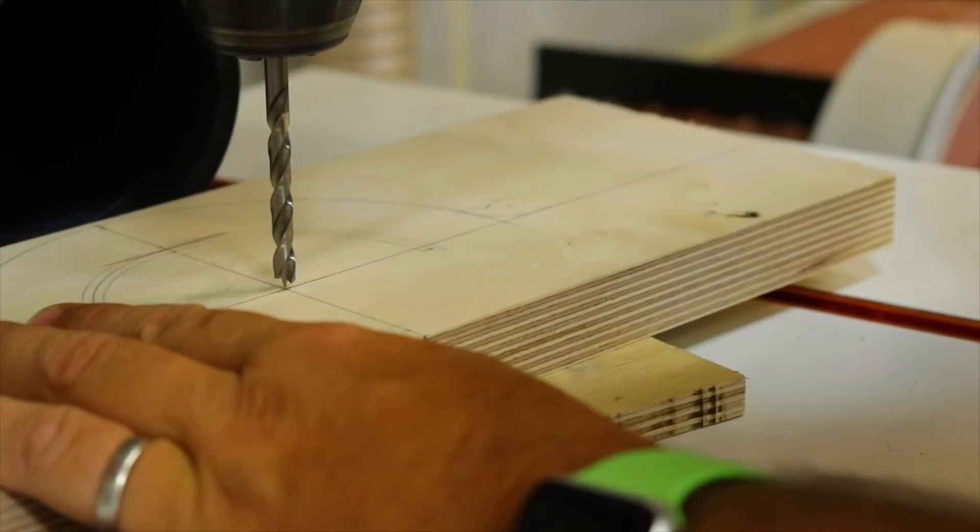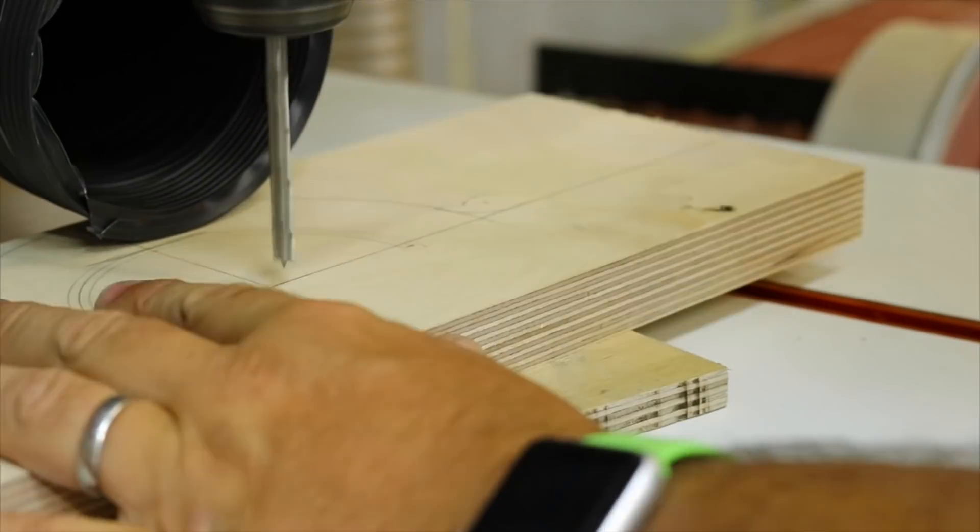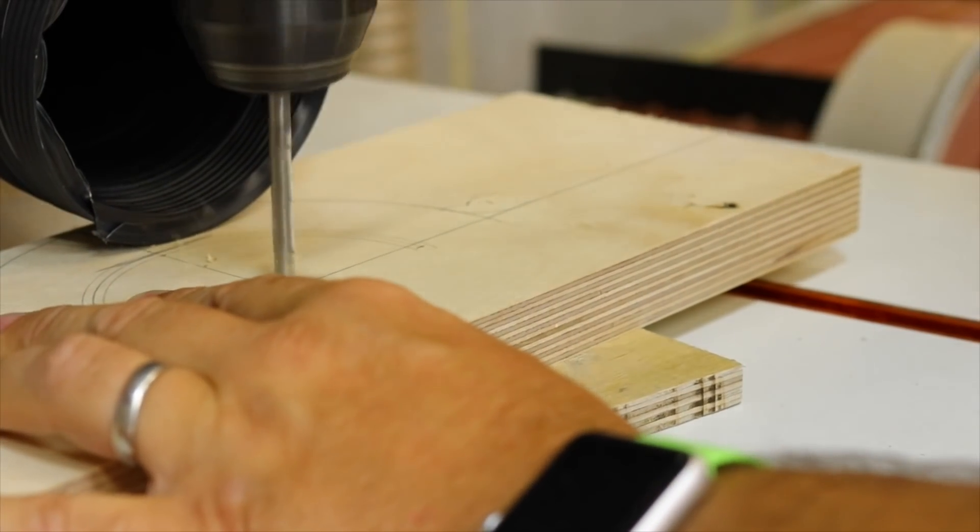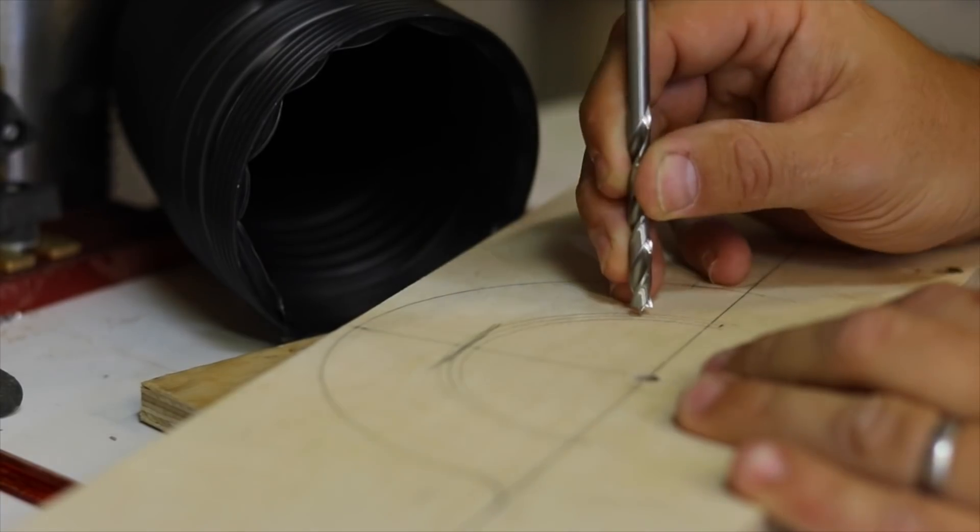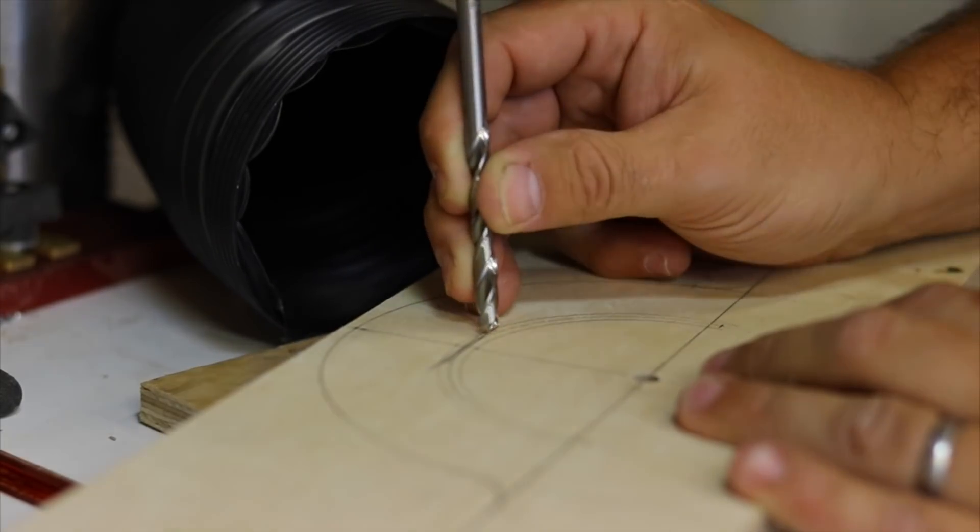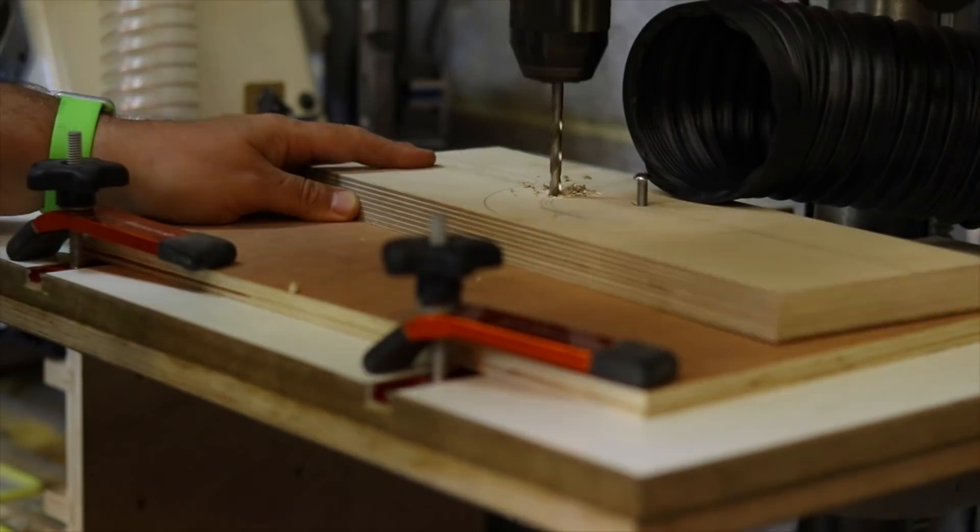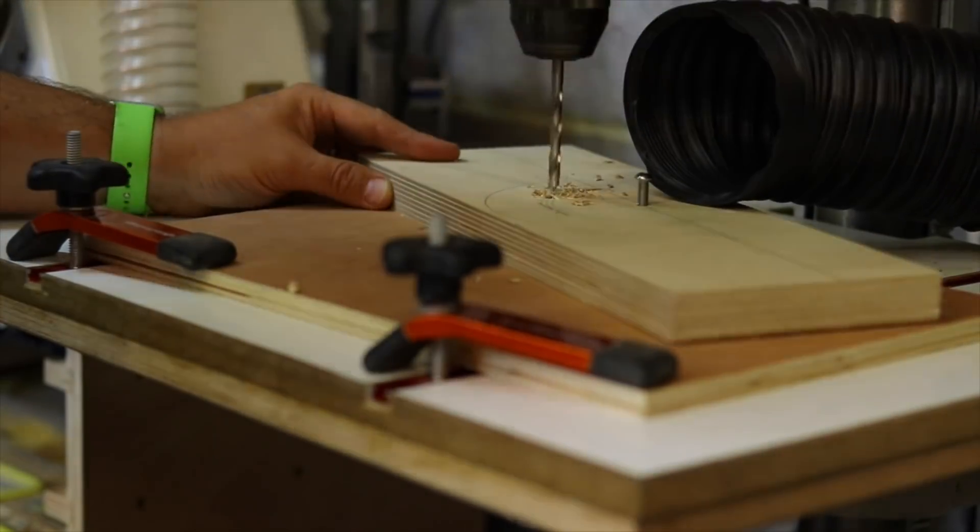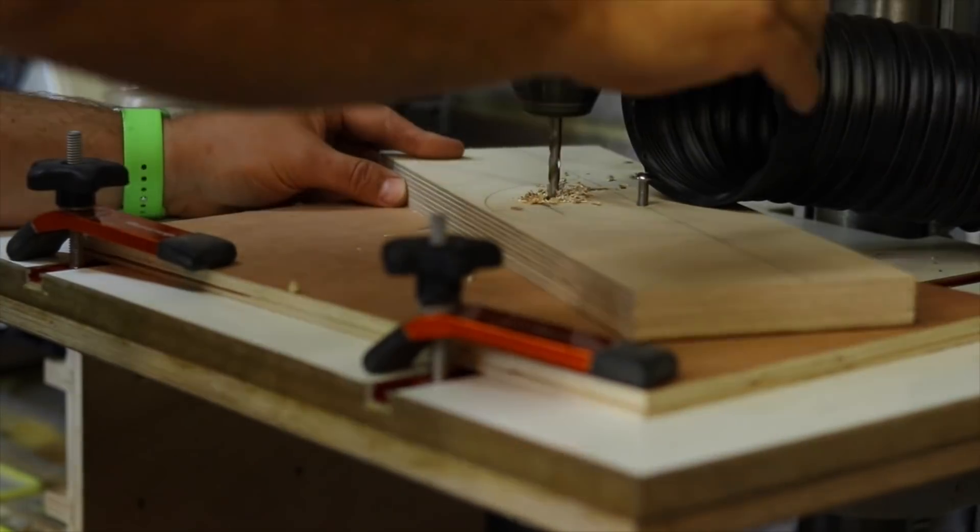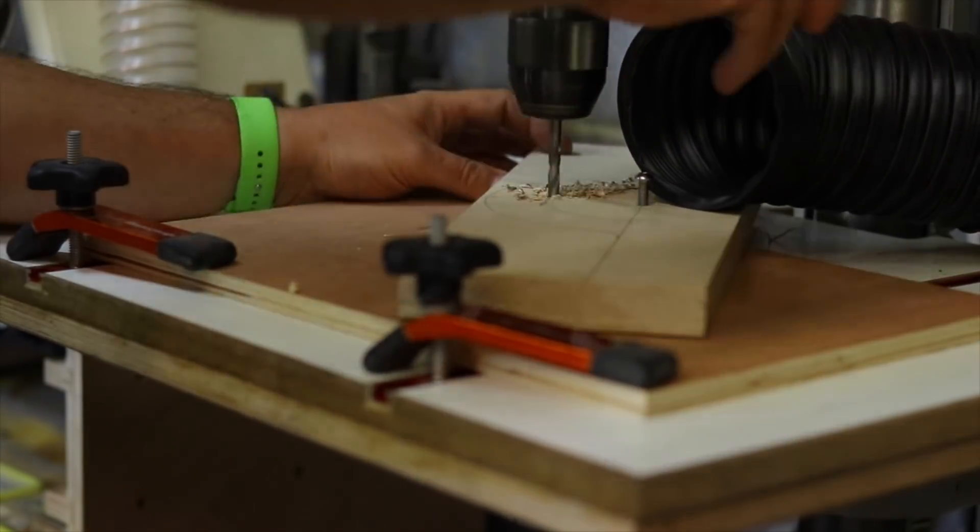So the first thing to do on this template is to drill the pivot hole, and then I'll use this by putting the bolt through into a piece of wood below to pivot as I drill each hole. And you can see now there's the bolt going through, and as I drill each hole I'm drilling exactly the same distance from the pivot hole.